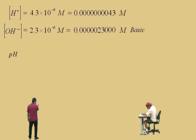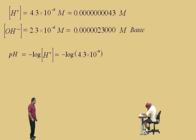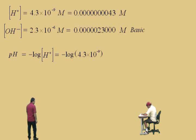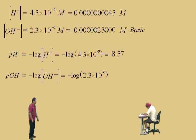Now let's calculate pH. Remember, what does p mean, Charlie? Negative log — that's right. And the H represents the hydrogen ion concentration — very nice. So pH equals the negative log of 4.3 times 10 to the negative 9th. Remember, we have two significant figures in our logarithmic calculation, so our answer should have two decimal places. What do you get, Charlie? 8.37 — that's right. Now let's calculate pOH. pOH is the negative log of the hydroxide ion concentration, which is 2.3 times 10 to the negative 6. Taking the log of two significant figures means two decimal places — what do you get? 5.64 — that's right.